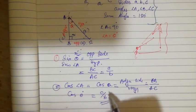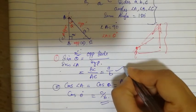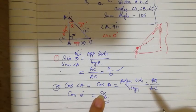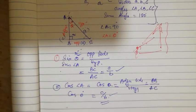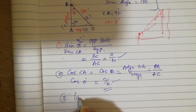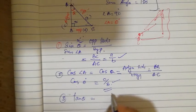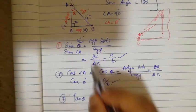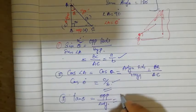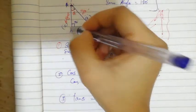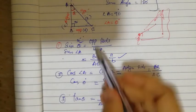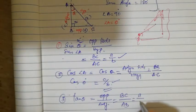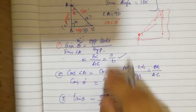So we have: sin theta equals opposite side by hypotenuse, and cos theta equals adjacent side by hypotenuse. The third relation is tan theta. Tan theta is equal to opposite side by adjacent side. Based on theta, opposite side is BC and adjacent side is AB, so tan theta equals BC by AB, which equals a by c.